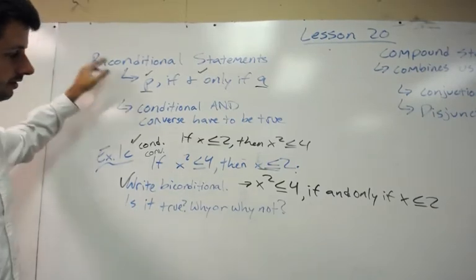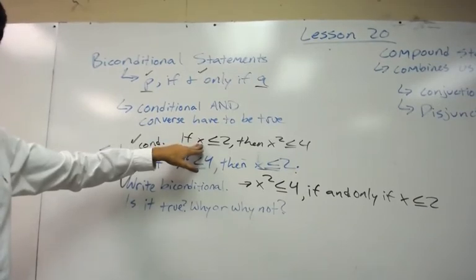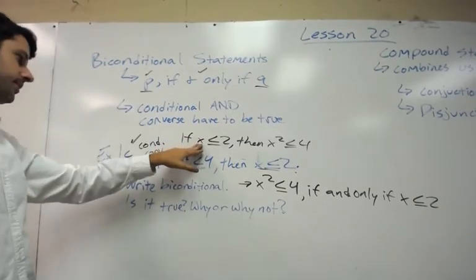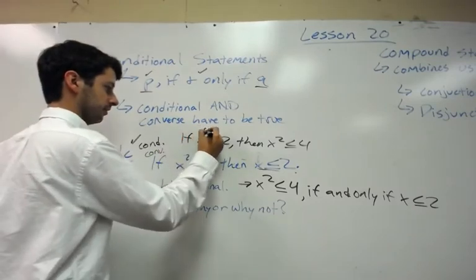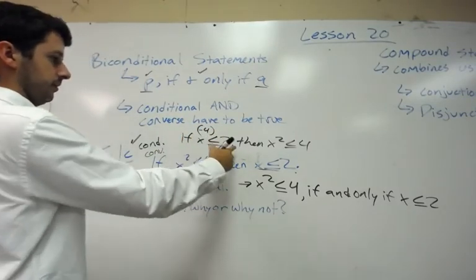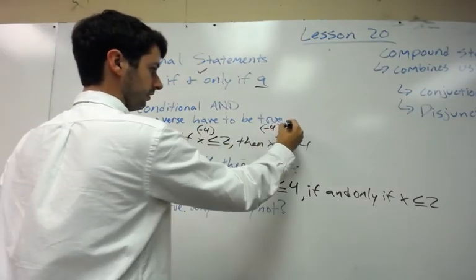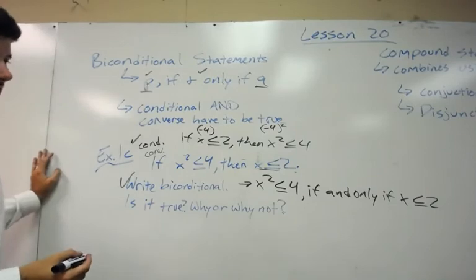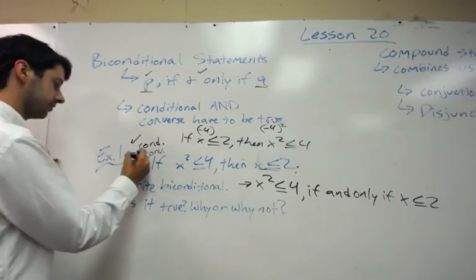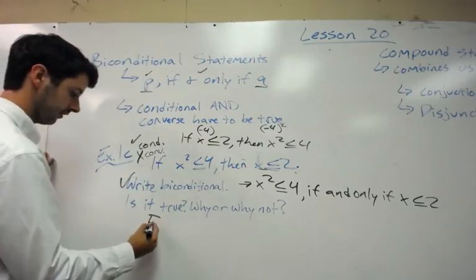so what if we had negative 4 as x? If x was negative 4, that's less than or equal to 2. That works. But if we plug it in here, negative 4 squared, that would actually be 16. That would not be less than or equal to 4. So, therefore, the converse does not work. So, it is false.